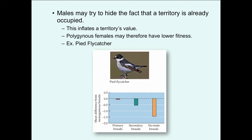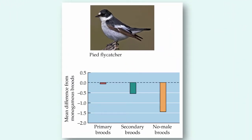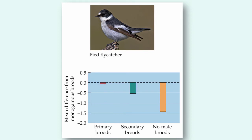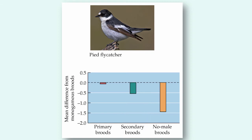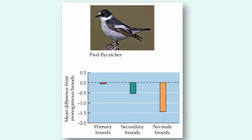This has been demonstrated with pied flycatchers. On polygynous territories, the primary brood typically receives male parental care, and the mean number of young produced is statistically indistinguishable from monogamous broods. However, secondary broods are definitely harmed — the male provides much less parental care, and those females probably would have been better off mating monogamously. Some females receive absolutely no parental care, and those no-male broods have the lowest reproductive success. The male tricks females into joining, violating the polygyny threshold model.